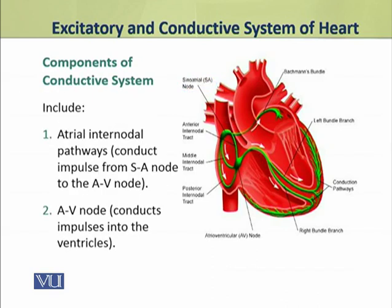Dear students, the components of the conductive system of the heart include, number one, the atrial inter-nodal pathways, which conduct impulses from the sinoatrial — that is, SA node — to the AV node.